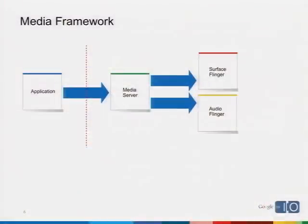Here's a 30,000-foot view of the way the media framework works. On the left side, you'll notice the application. The red dashed line denotes the process boundary — applications run in one process, and the media server actually runs in its own process that's brought up during boot time. So the codecs, file parsers, network stack, and everything to do with playing media sits in a separate process. Underneath that are the hardware abstractions: SurfaceFlinger for video and graphics, and AudioFlinger for audio.